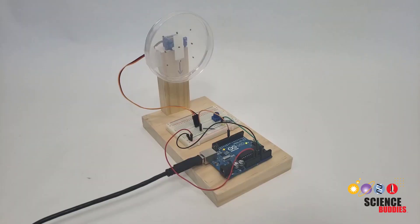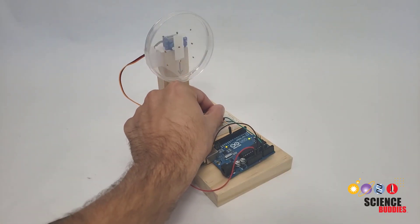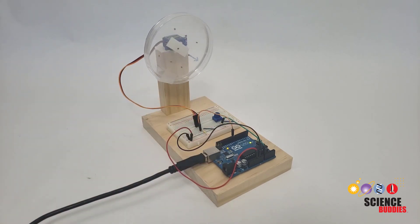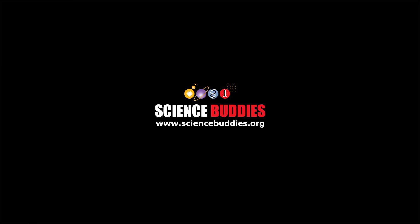For plant germination experiments you can do at home, including building your own device called a clinostat to simulate what plant growth is like in the microgravity environment of space, check out the links in the description of this video. For thousands of other fun hands-on science and engineering projects, visit us online at www.sciencebuddies.org.